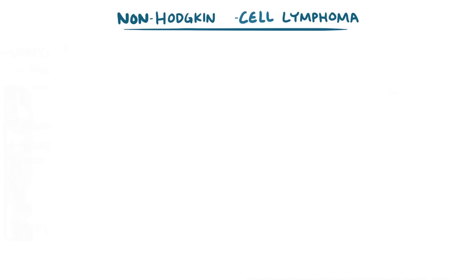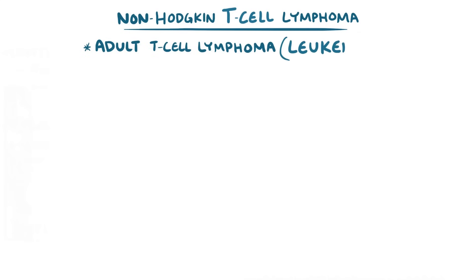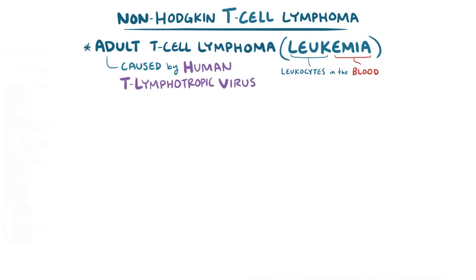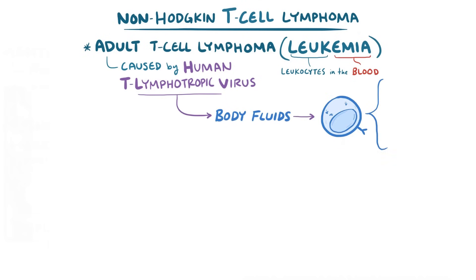The other group of non-Hodgkin lymphomas are the T cell lymphomas. The first is adult T cell lymphoma, sometimes referred to as a leukemia because the abnormal white blood cells often get into the bloodstream. It is thought to be caused by the human T-lymphotropic virus, or HTLV, which spreads through body fluids and infects T cells. HTLV incorporates its DNA into T cell DNA, causing a genetic mutation that leads to adult T cell lymphoma.